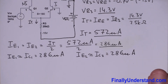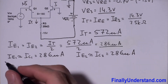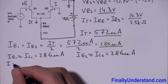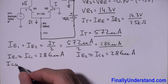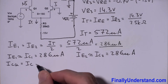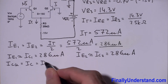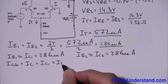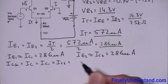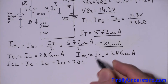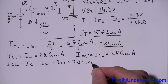So we can say we found ICQ. My ICQ equals IC1, which also equals IC2, and this has a value of 286 microamps.